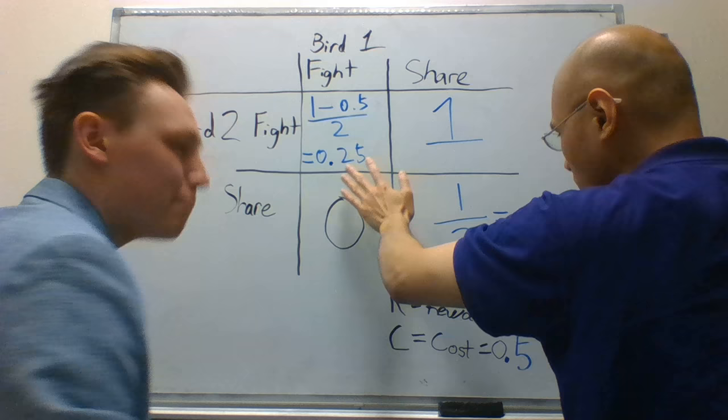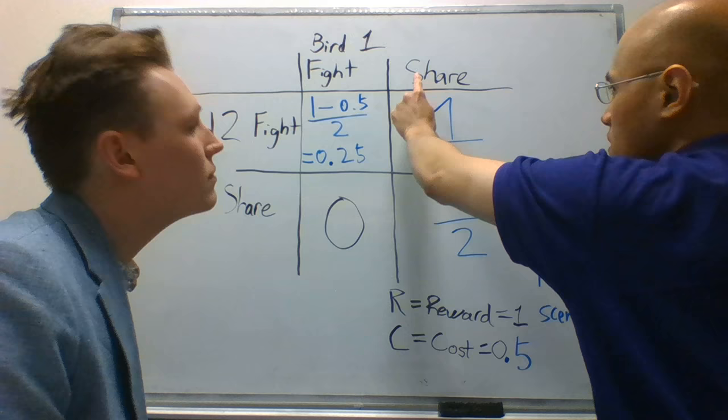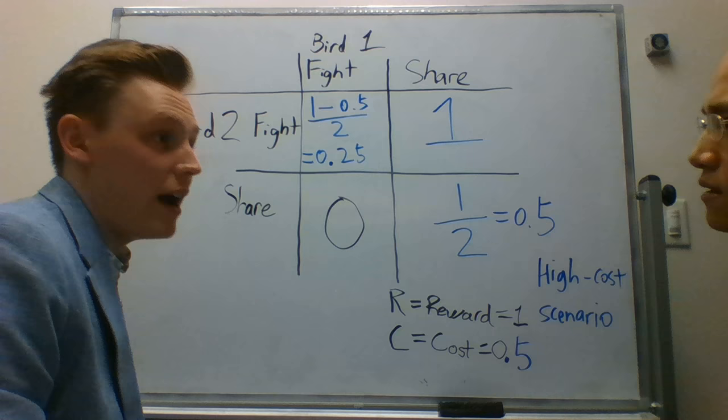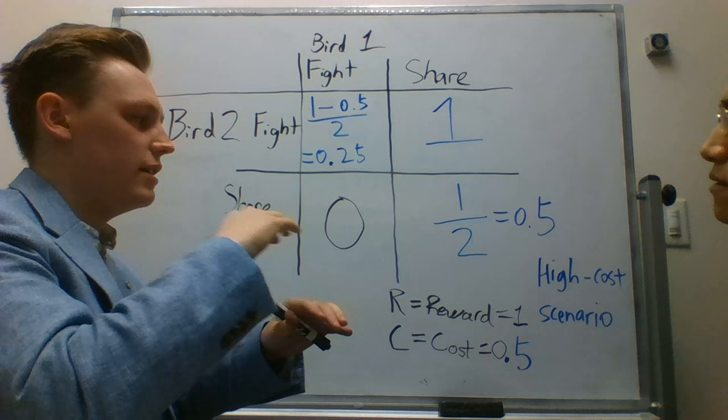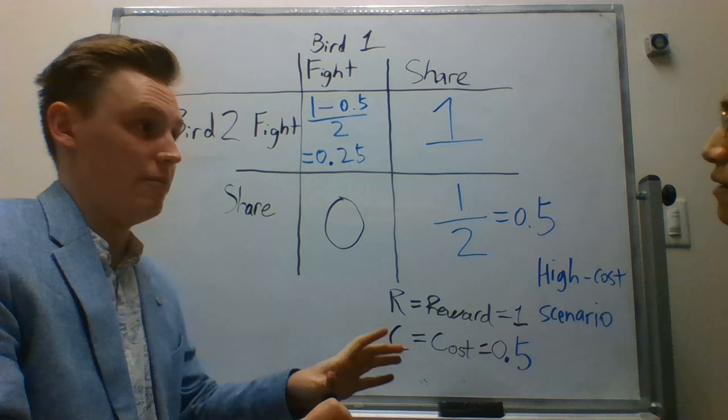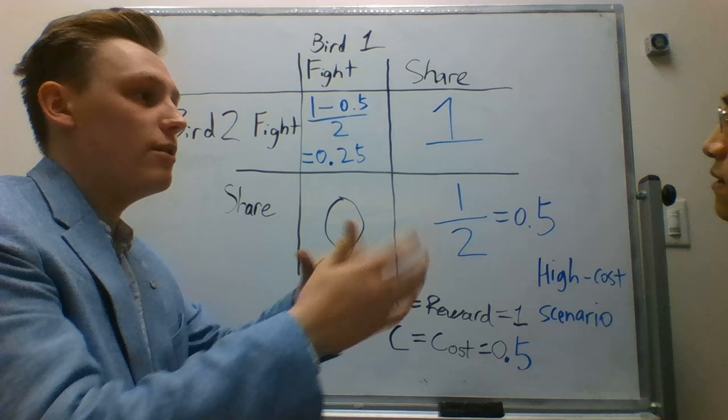Sometimes, depending on what bird one does, bird two should alter its strategy as well to maximize its payoff. And that is where we get into what is called a stable strategy — a state where a behavior is constant. While it will fluctuate in the population in terms of how much of the population uses a certain behavior, it will never completely vanish. I'll show this using a time graph.